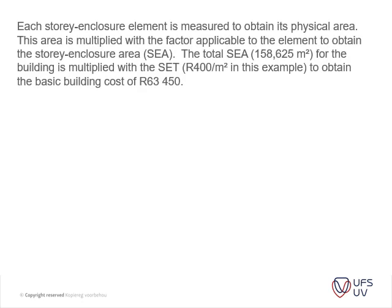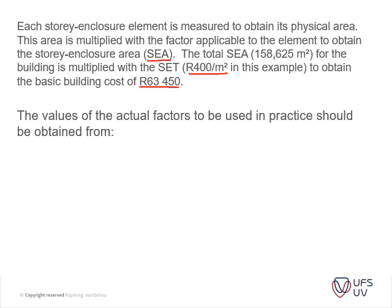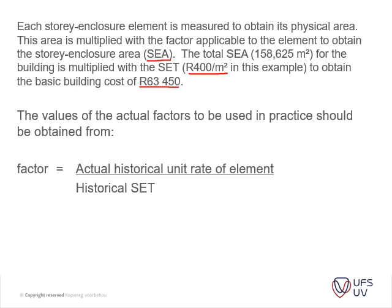Each story enclosure element is measured to obtain its physical area, the area is multiplied by the factor applicable to that element, and you get the story enclosure area. The total story enclosure area in this case was 158m² for the building, multiplied by R400/m² to obtain the same amount as in the previous two examples. The factor formula is: the actual historical data rate of the element divided by the historical story enclosure tariff.